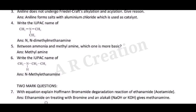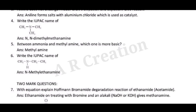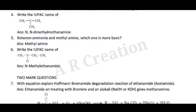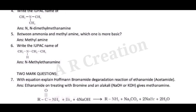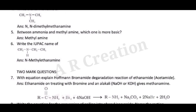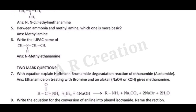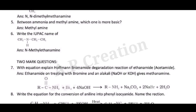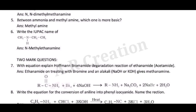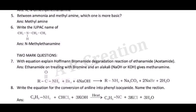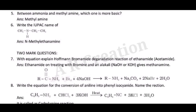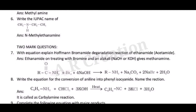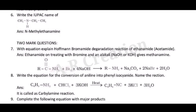2-mark questions. Question 7: With equation, explain Hofmann bromamide degradation reaction of ethanamide (acetamide). Answer: Ethanamide on treating with bromine and an alkali (NaOH) gives methanamine. R–C(=O)–NH₂ + Br₂ + 4NaOH → R–NH₂ + Na₂CO₃ + 2NaBr + 2H₂O.